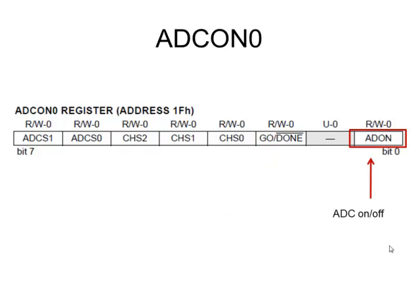You don't always use the analog-to-digital converter, so if you're not using it in a particular application, you can just turn it off to conserve power. A lot of microcontrollers run on battery-operated systems, and conserving power is very important in that case.